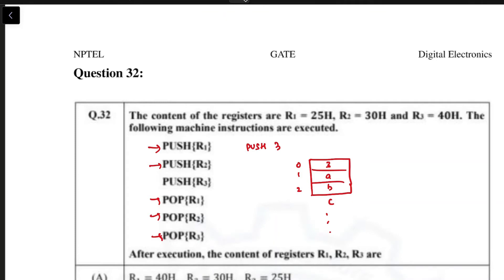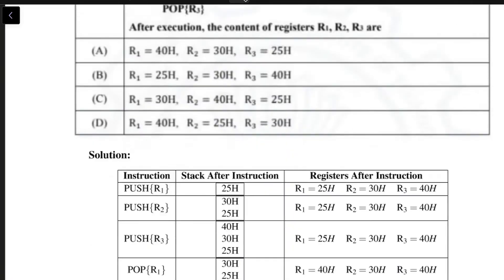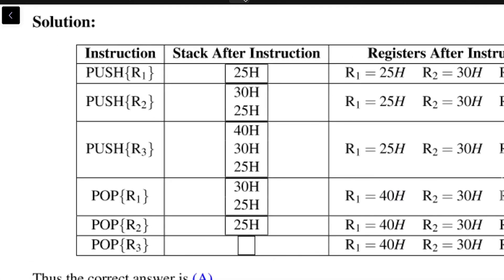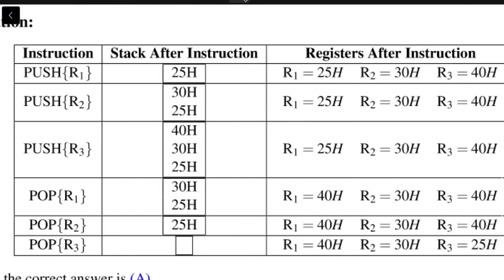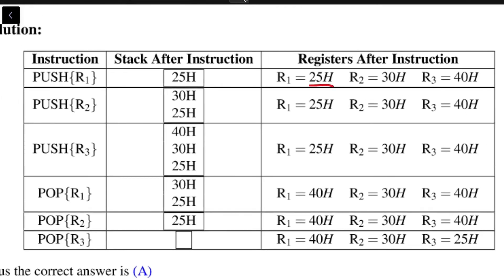The analogy would be like a stack of books - if you were to place another book on top of the stack, that would be the zero-indexed book. Now, the idea is that initially the stack is empty and the registers have values 25h, 30h, and 40h.